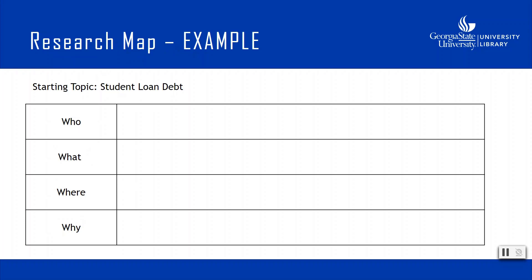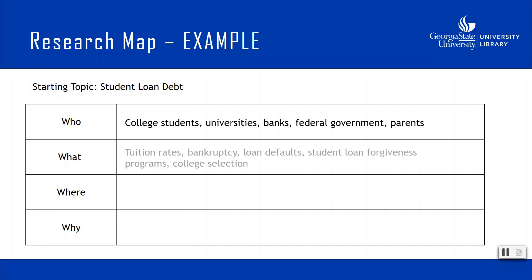Let's look at an example. Using the starting topic student loan debt, what are some groups of people affected by this topic? Pulling from Wikipedia and relevant news sources, here are some ideas: college students, universities, banks, federal government, or parents. For the 'what' — what impact does this topic have on these groups? I identified tuition rates, bankruptcy, loan defaults, student loan forgiveness programs, and college selection.